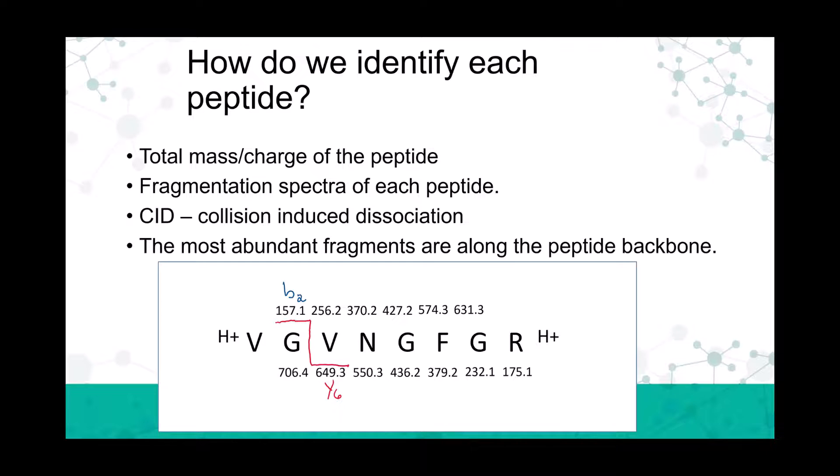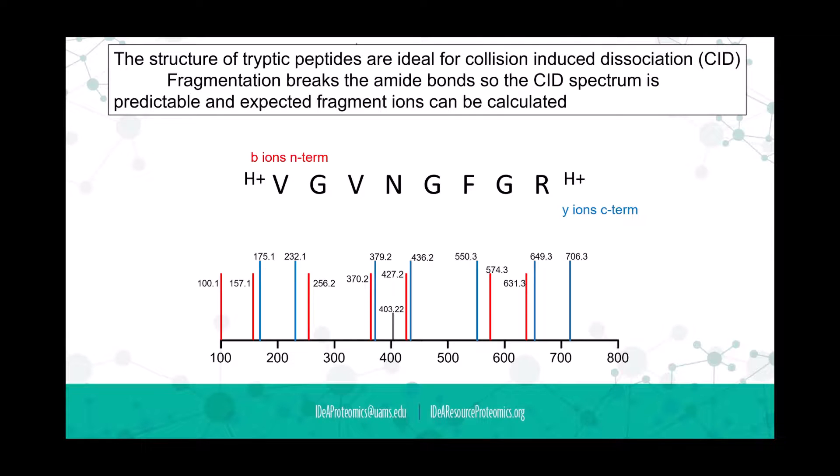What I have written here is a peptide sequence: V-G-V-N-G-F-G-R, going from the N-terminal on the left to the C-terminal on the right. These numbers you see above are the masses you would find if you were to fragment this particular peptide along the backbone. I have this red line drawn here that shows a place where it's fragmented. If it fragments between the glycine and the valine, you would end up with one fragment with a mass-to-charge ratio of 157.1 and the other fragment would have a mass of 649.3. You can see that you could fragment at all those different places along the backbone to get different charges.